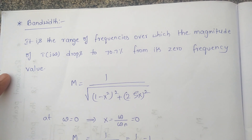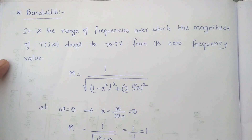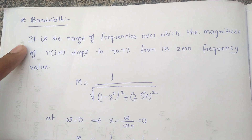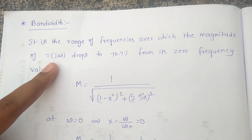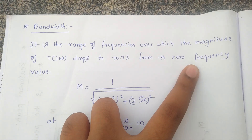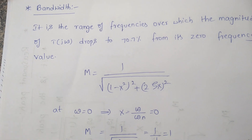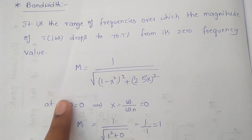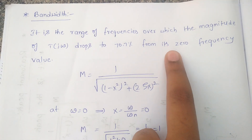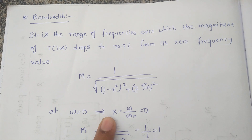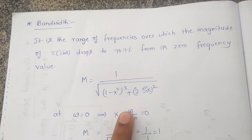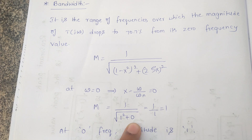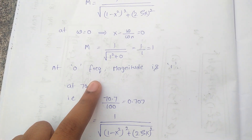Bandwidth is also a frequency domain specification. Normally, bandwidth is the range of frequencies over which the system works satisfactorily. Specifically, it is the range over which the magnitude of T(jω) drops to 70.7% from its zero-frequency value. We first find the magnitude at zero frequency (ω = 0): h = ω/ωn = 0, so M = 1/√(1² + 0) = 1. At zero frequency, magnitude equals 1.